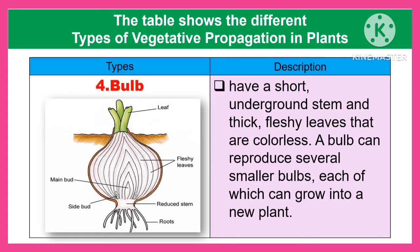Another type is the bulb. The bulb has a short underground stem and thick, fleshy leaves that are colorless. A bulb can reproduce several smaller bulbs, each of which can grow into a new plant.